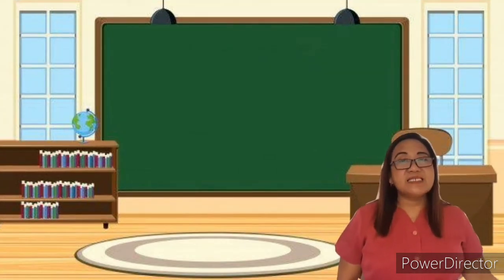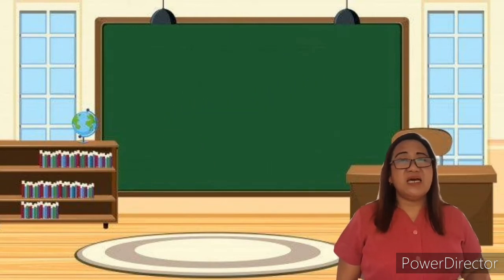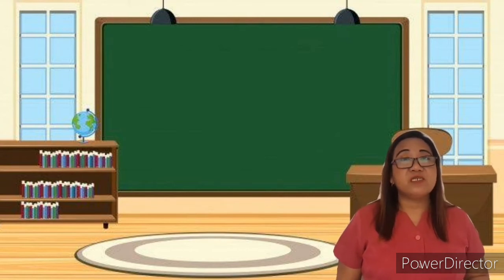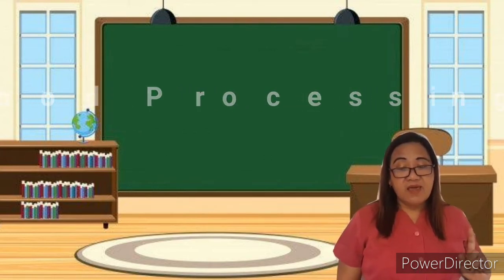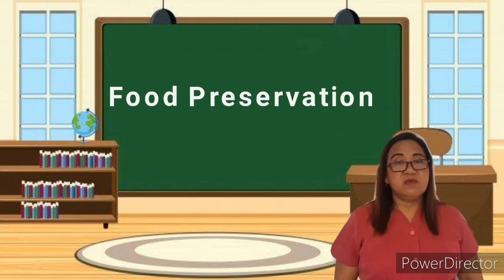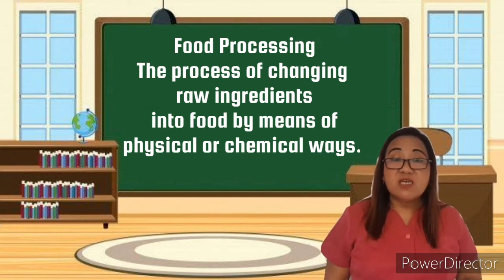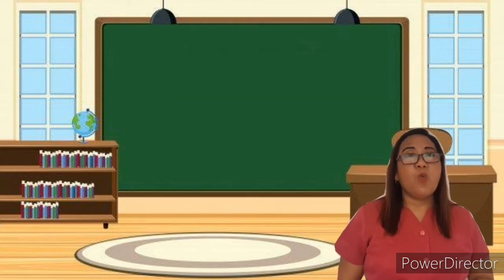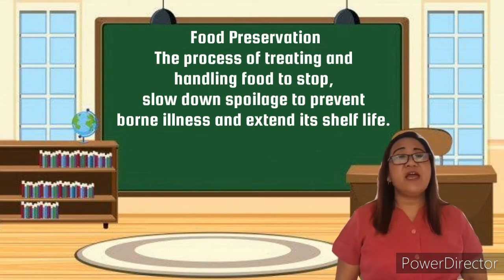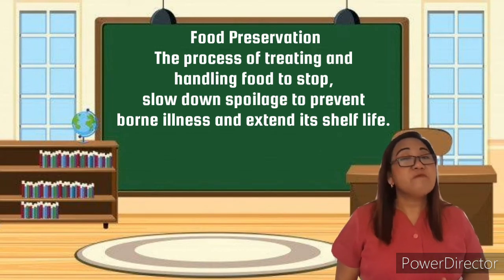Let us discuss our topic today: different ways of food preservation. There are two different concepts — first, food processing; second, food preservation. Food processing is the process of changing raw ingredients into food by means of physical and chemical ways. Food preservation, on the other hand, is the process of treating and handling food to stop or slow down spoilage, prevent illness, and extend its shelf life.